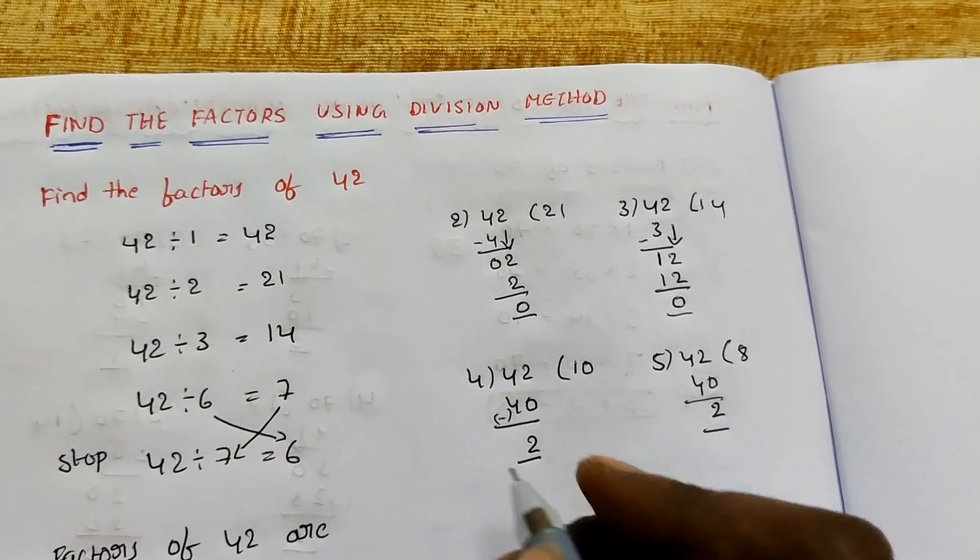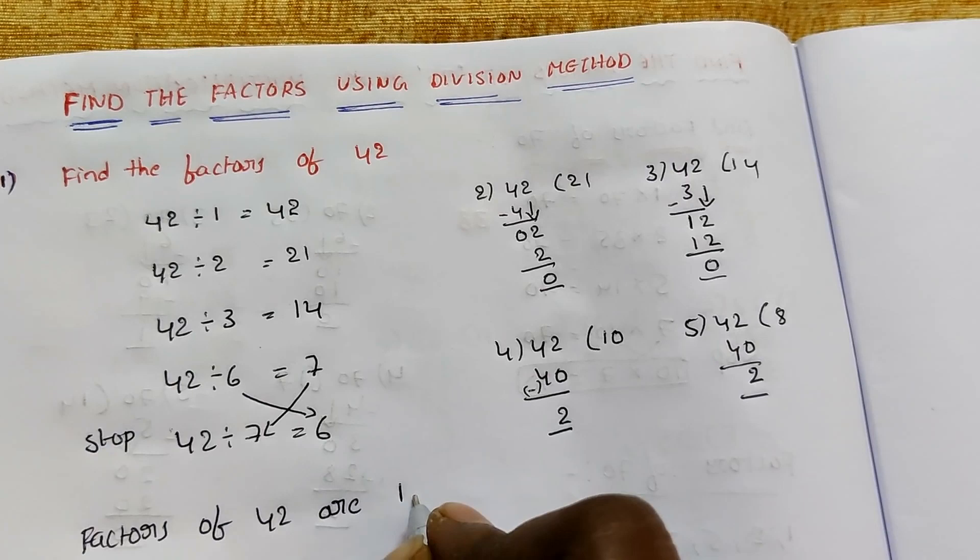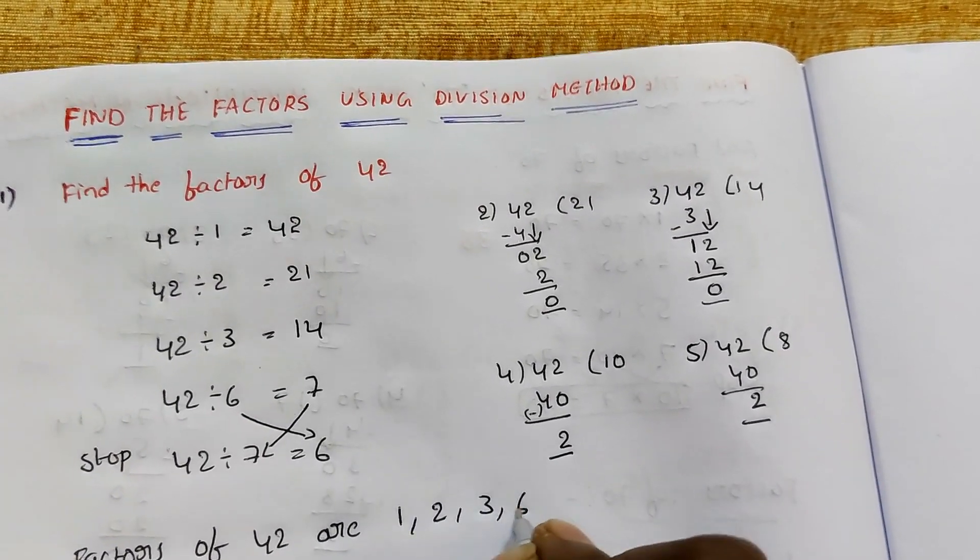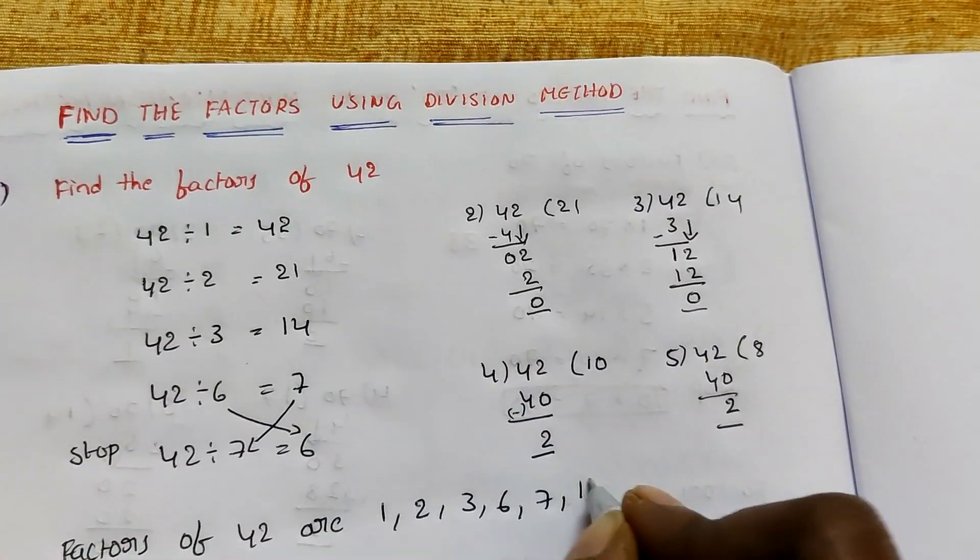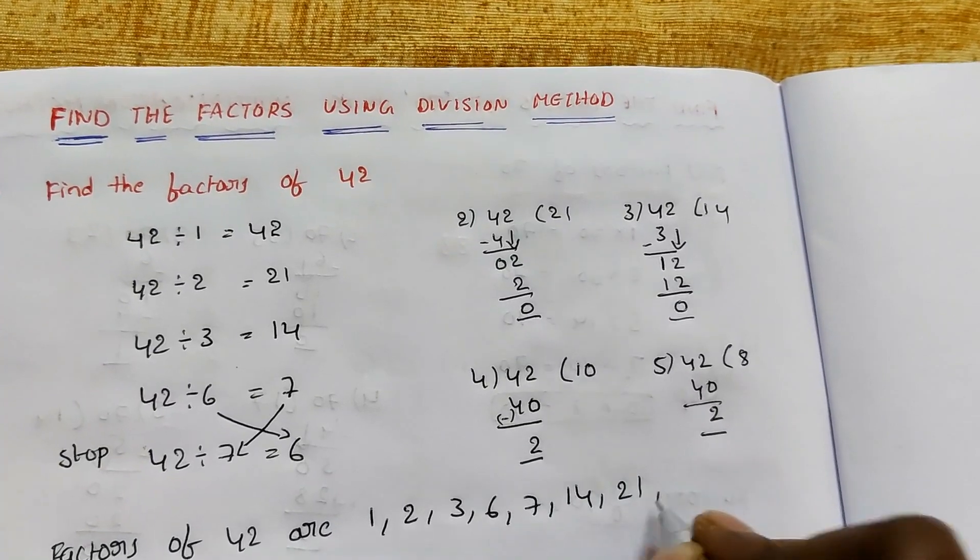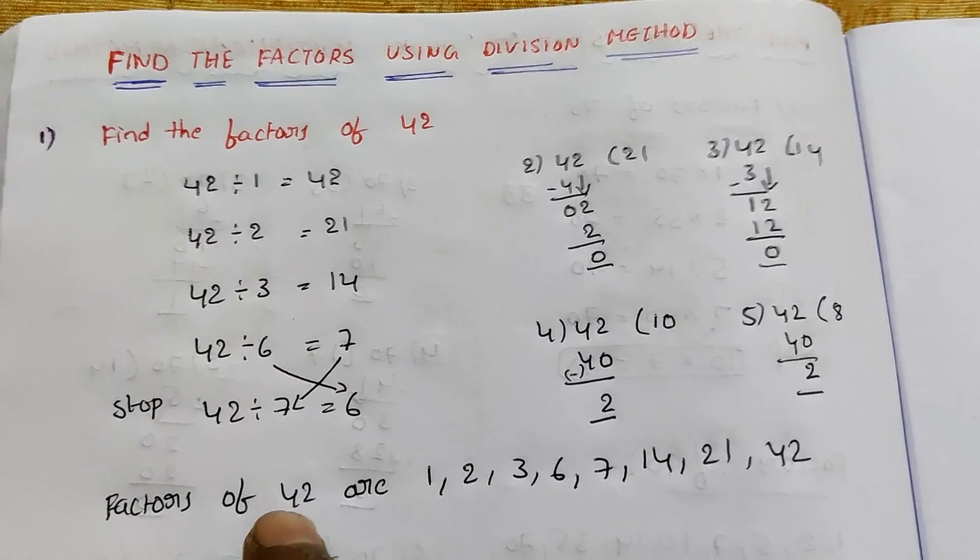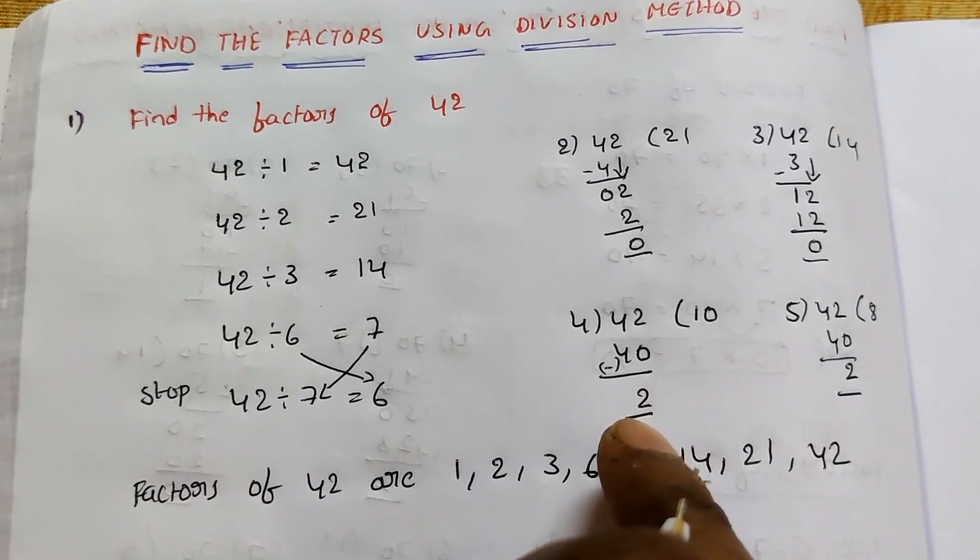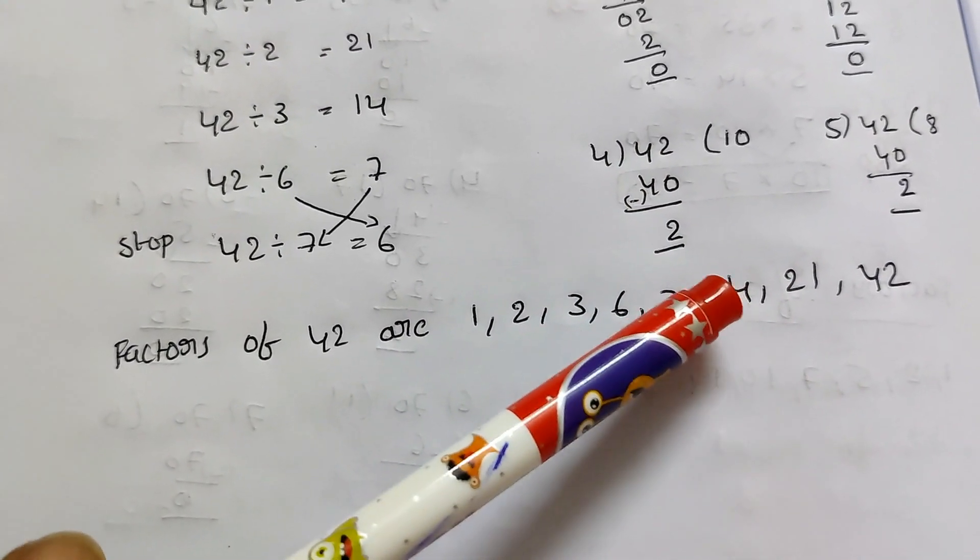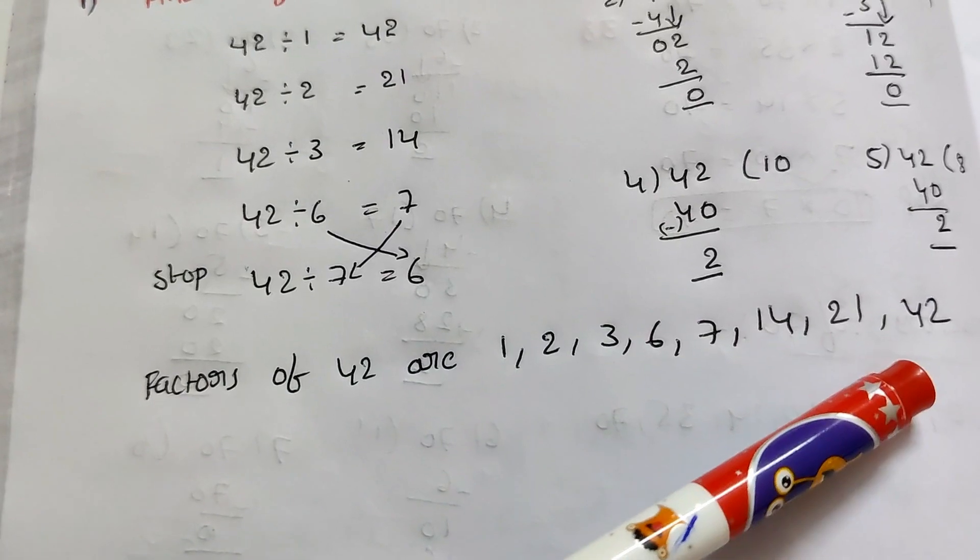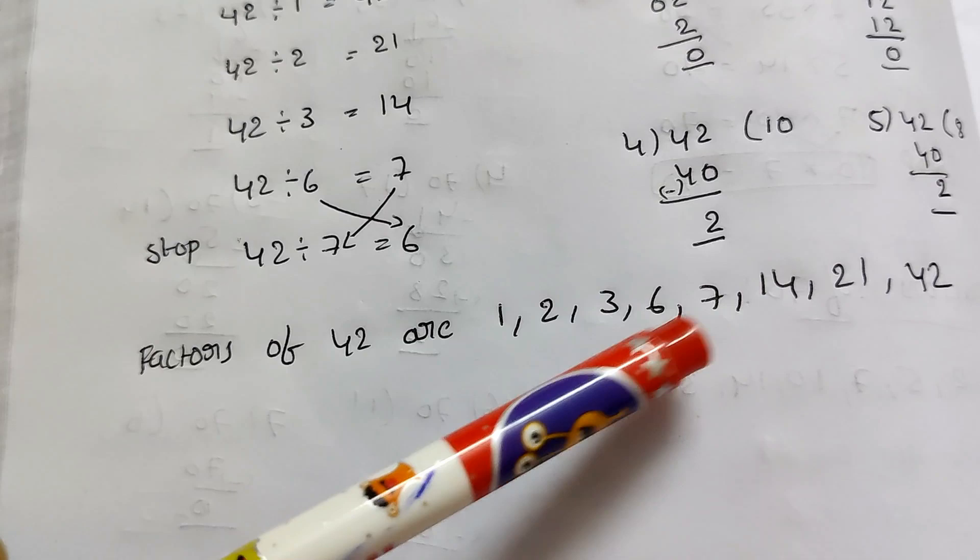1, 2, 3, 6, 7, 14, 21, and 42. These are the factors of 42.